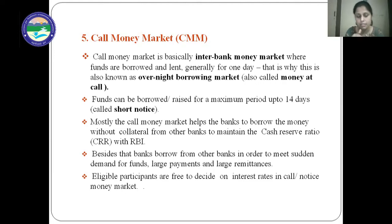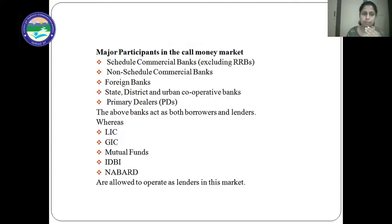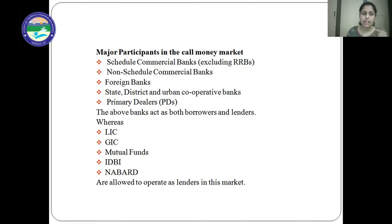Eligible participants are free to decide on interest rates in the call notice money market. Major participants in the call money market are scheduled commercial banks excluding regional rural banks, non-scheduled commercial banks, foreign banks, state district and urban cooperative banks, and primary dealers. These banks act as both borrowers and lenders. Whereas LIC (Life Insurance Corporation), GIC (General Insurance Corporation), and mutual funds only lend in this market.